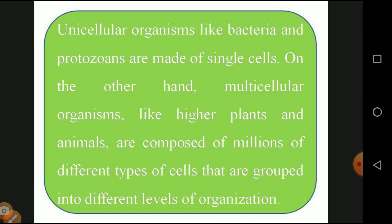Let us enter into the introduction of the topic. The unicellular organism and the multicellular organism - from sixth standard we know that a unicellular organism is made up of only one cell, while a multicellular organism is made up of more than one type of cell. Examples of unicellular organisms include bacteria, amoeba, and protozoa.